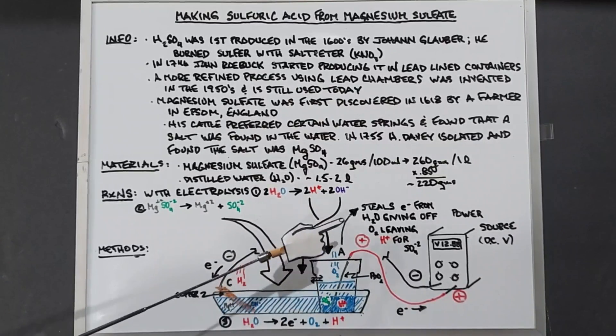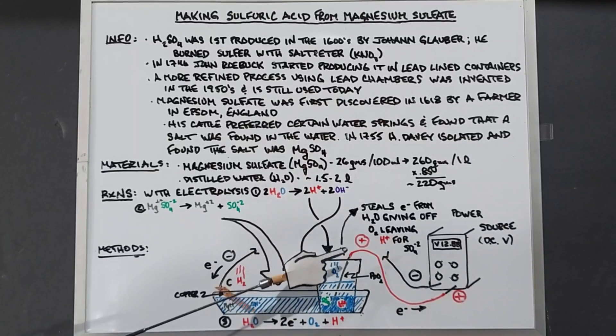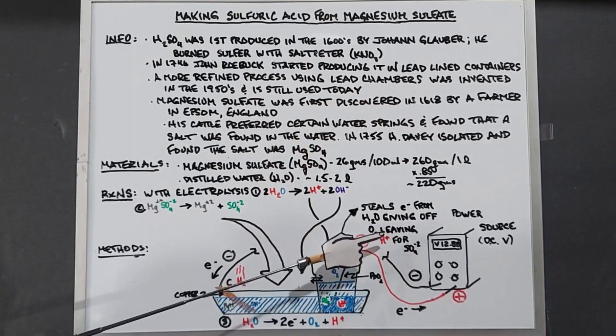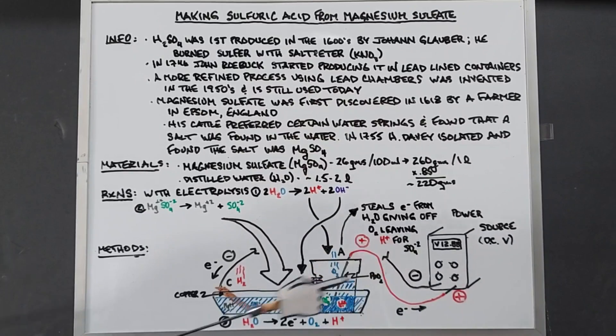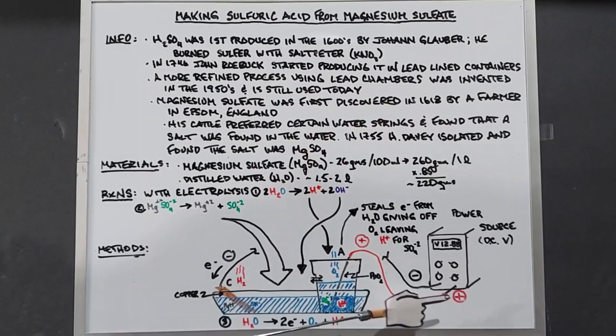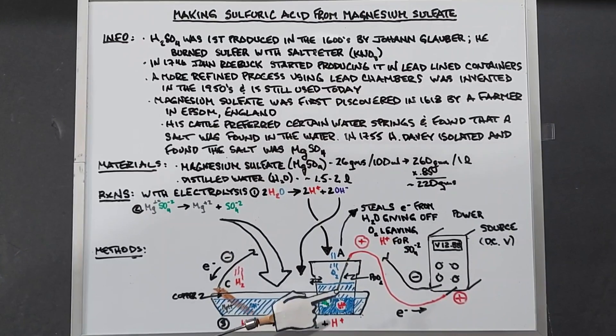At the anode, the electrode steals electrons from the water, giving off oxygen—we'll see oxygen bubbling here—leaving hydrogen. That hydrogen is then taken up quickly by the sulfate ions because they're oppositely charged. The reaction is H2O yields 2 electrons plus O2 plus H+. These electrons are stolen by the anode, leaving oxygen which bubbles and hydrogen which connects with SO4^2- to make H2SO4, our sulfuric acid.